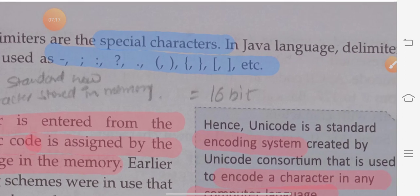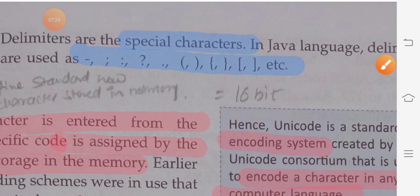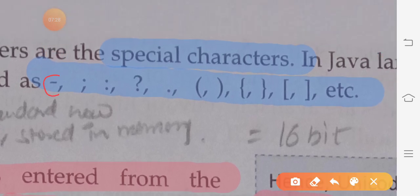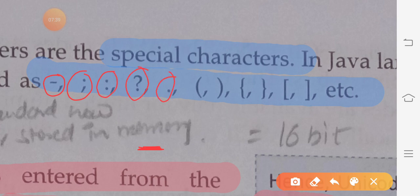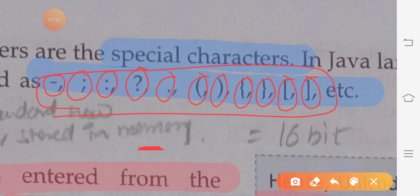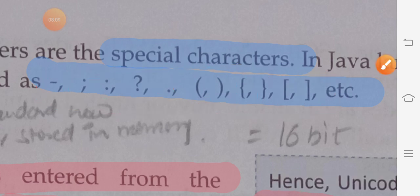Delimiters are special characters in Java. These include the underscore, semicolon, colon, question mark, dot, left and right round brackets, left and right curly brackets, and left and right square brackets. All these are special characters — we don't have particular names for them like A, B, C or 0 to 9. These special characters are used to perform some special task.